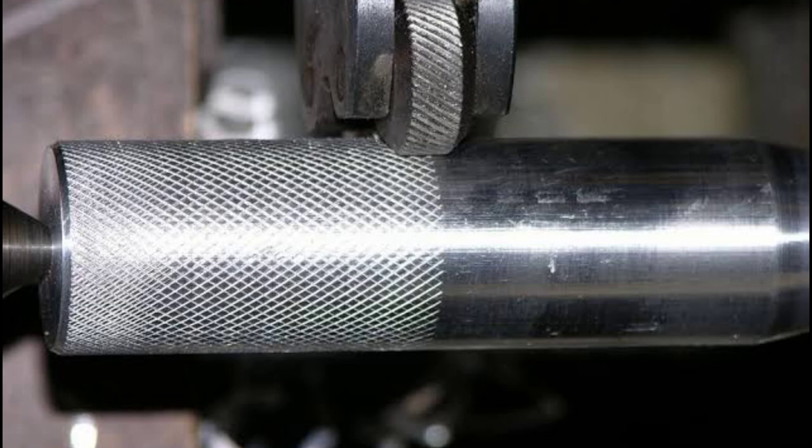5. Knurling. Knurling uses a tool that consists of a single or multiple cylindrical wheels which can rotate inside the tool holders.